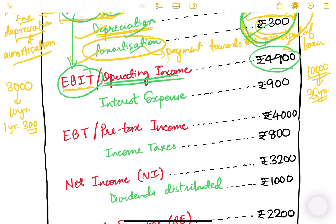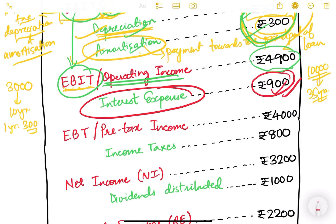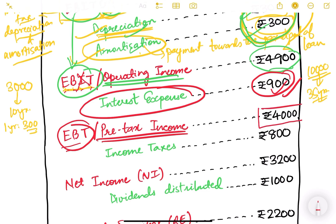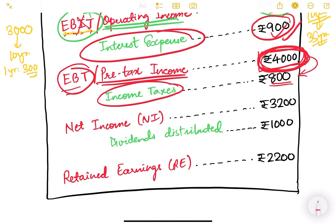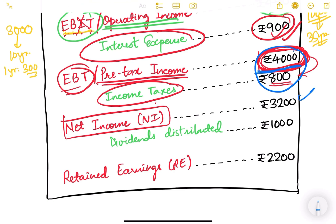From the operating income (EBIT of 4,900), you subtract the interest expenditure paid to the bank - say 900 rupees - to get EBT (Earnings Before Tax), also known as pre-tax income, which is 4,000. This is your actual taxable income. On this 4,000, corporate or income tax is applied - say 800 rupees. Subtracting income tax from pre-tax income gives net income: 4,000 minus 800 equals 3,200 rupees.